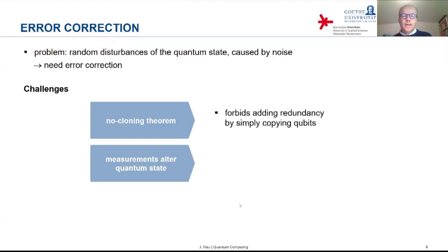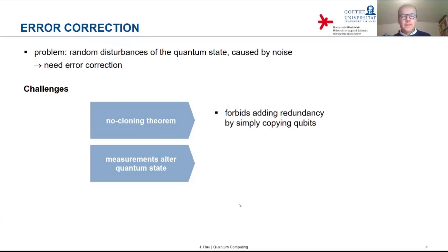Another complication arises from the fact that measurements generally disturb the quantum state. So if you receive a qubit and you know it may have been disturbed, you cannot simply perform a measurement on the qubit to find out what kind of error may have occurred. If you send redundant qubits and then try to find out what kind of error occurred in transit by performing measurements on all these qubits, you cannot in general do that without disturbing their states and therefore destroying the quantum information you want to receive.